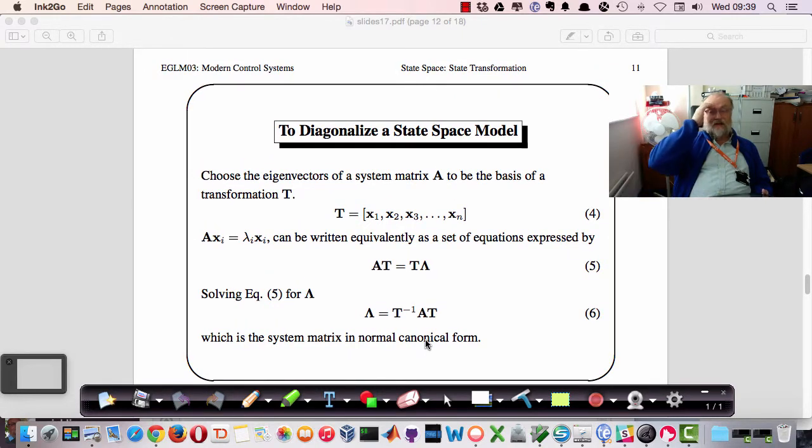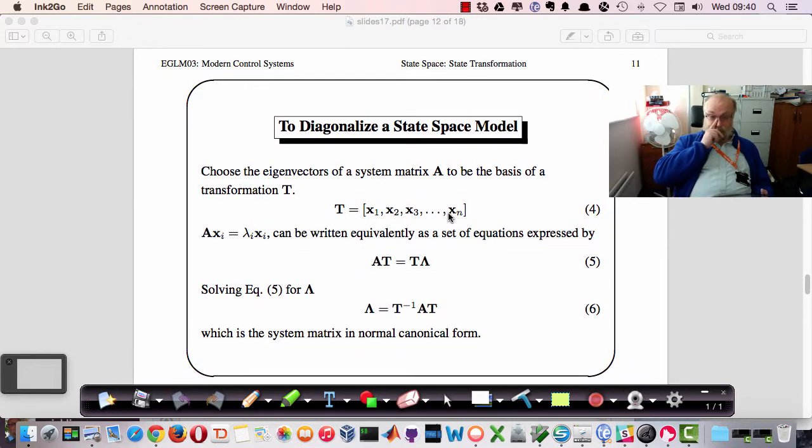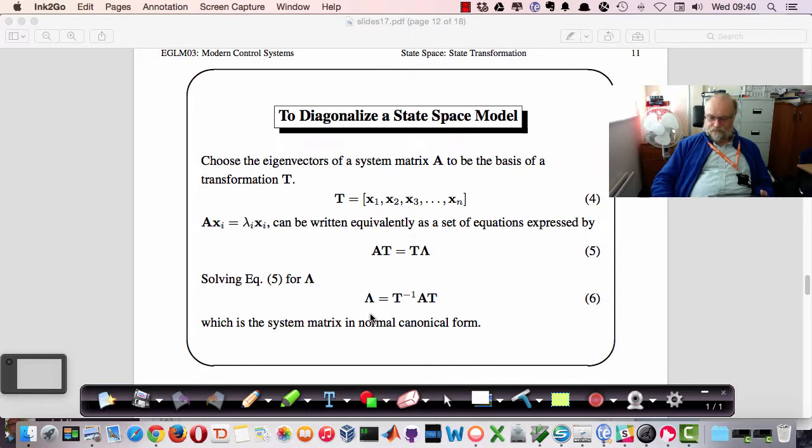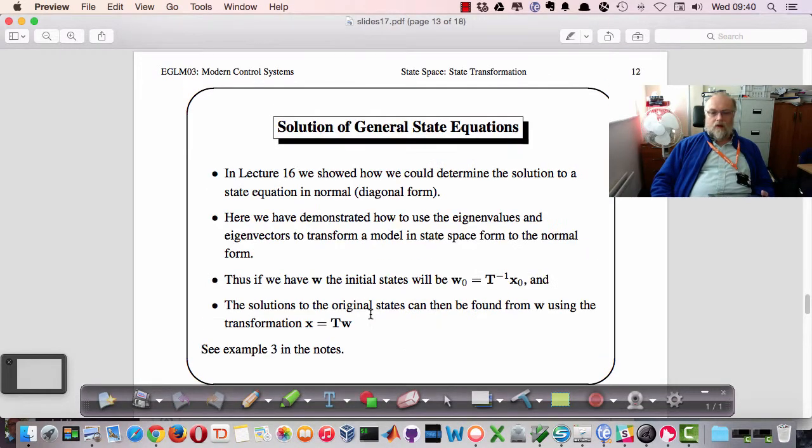So if we want to diagonalize a state-space model, make it its normal form, then what we can do is we can choose the eigenvectors to be the T matrix. So if we take the eigenvectors, each one of these representing lambda, so x1 goes with lambda 1 and so on. So if we produce the matrix which represents the eigenvectors, then AT is equal to T lambda, and solving that for lambda gives us lambda equals T minus 1 AT. So if we've got any A matrix and we multiply it by its eigenvector matrix, premultiplied by the inverse of the eigenvector matrix, we will get a matrix which has lambda on the diagonal, or the vectors on the diagonal.